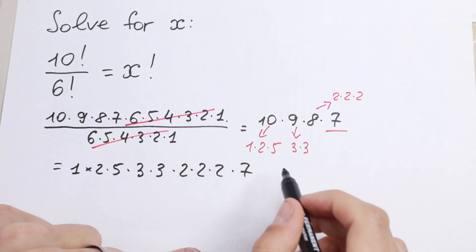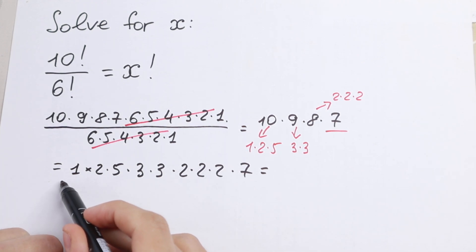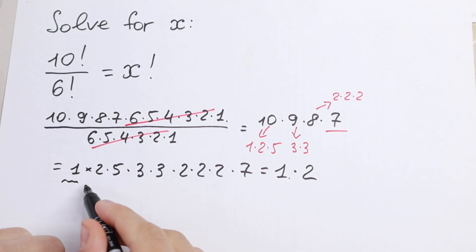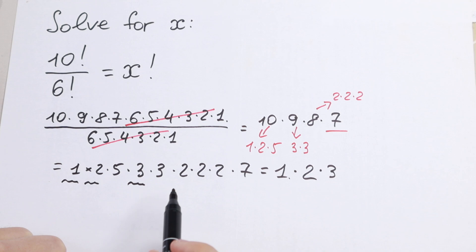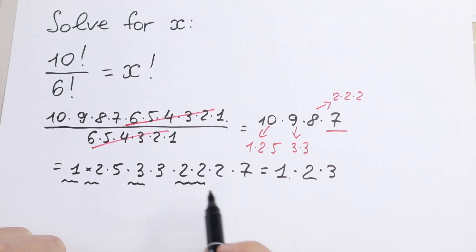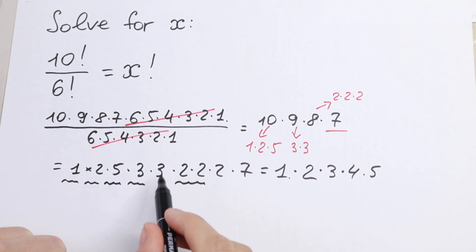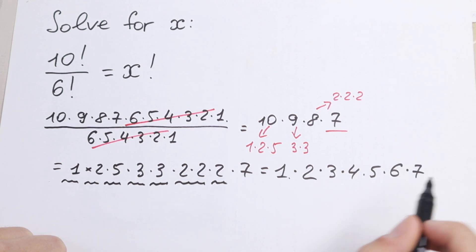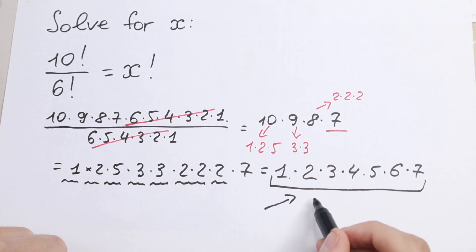Let's think closely about this order and try to create the sequence we need to identify a factorial. Right here we have 1. We also have 2. Next we have 3 times 3, and multiplying 2 times 2 gives us 4. We also have 5. Then 3 times 2 gives us 6. And the last number is 7. So as you can see, this is exactly 7 factorial!